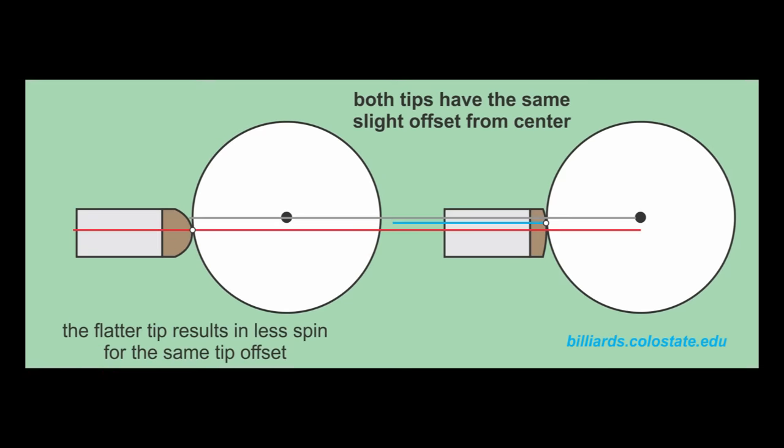A flatter tip is better if you want to limit the amount of unintentional spin that can be applied, for example to reduce possible cue ball deflection due to alignment errors. With a flatter tip, the tip contact point will be closer to the center of the cue ball for a given tip offset from center.